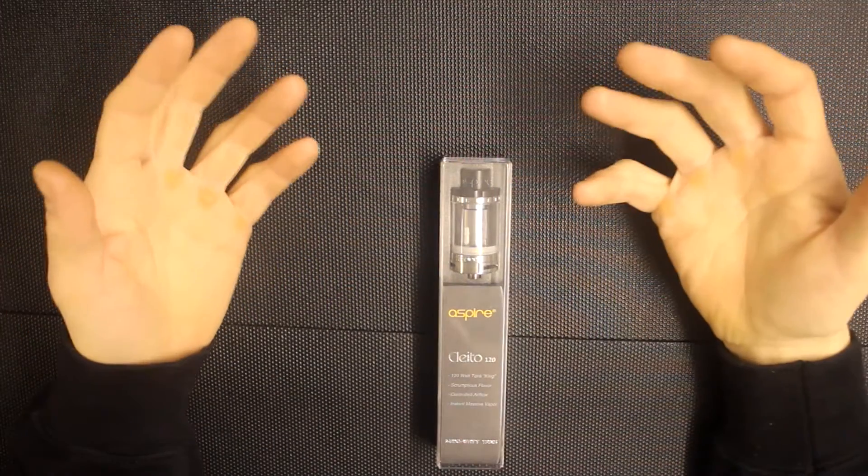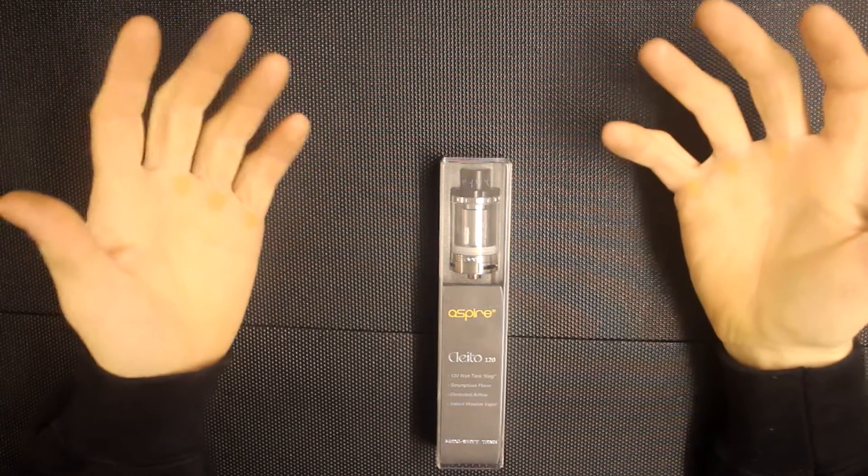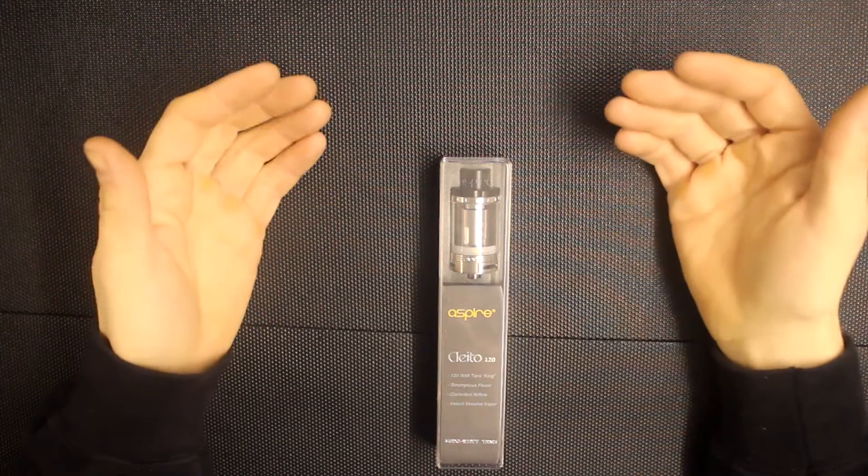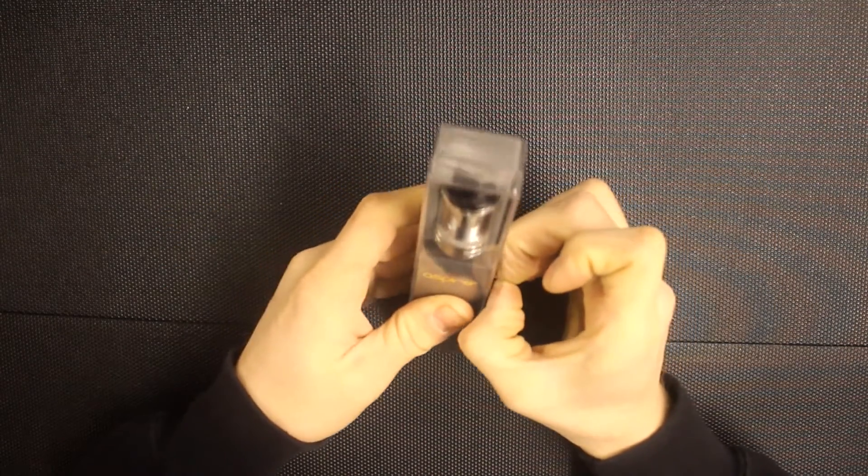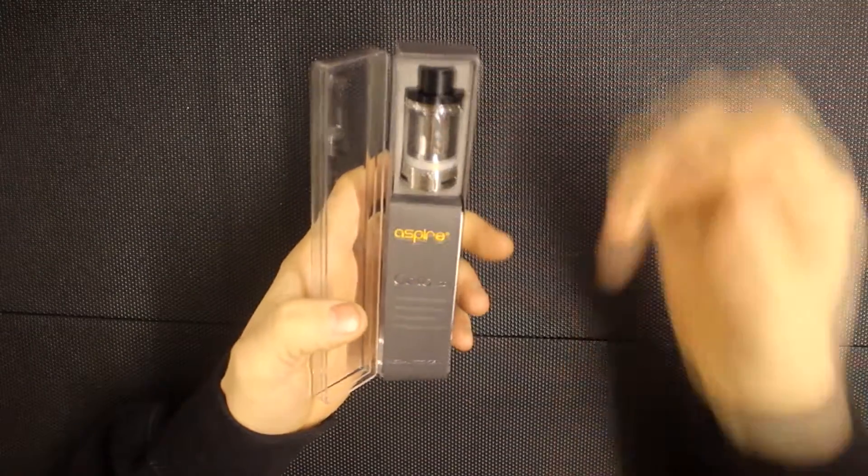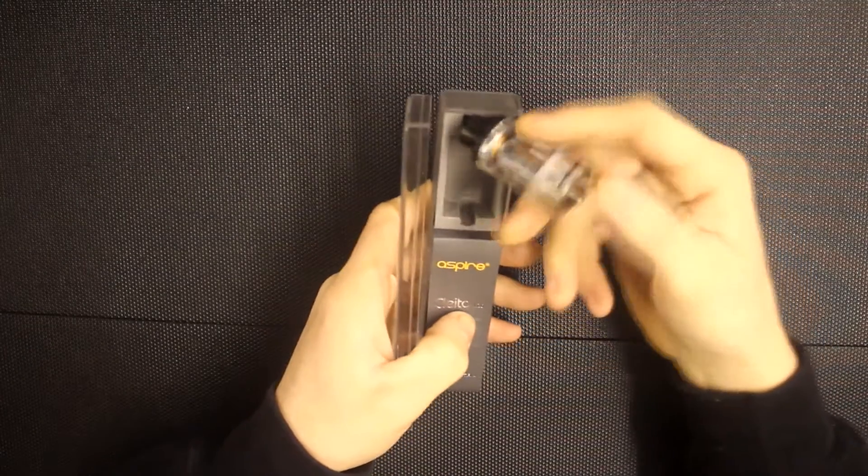Hi guys, Mark here. So got the Cleito 120. To be perfectly honest with you guys, I got this from Amazon and it came to my door for 21 quid. We're going to open it up and see what's inside here. Like I said, we've had some dealings with the original Cleito, so we kind of know what we're going to be looking at. But obviously instantly you can see that this tank is massive.